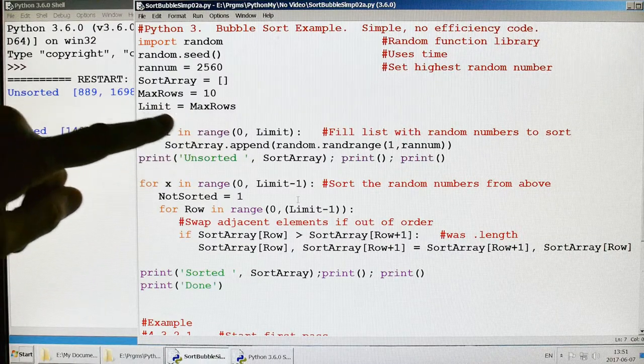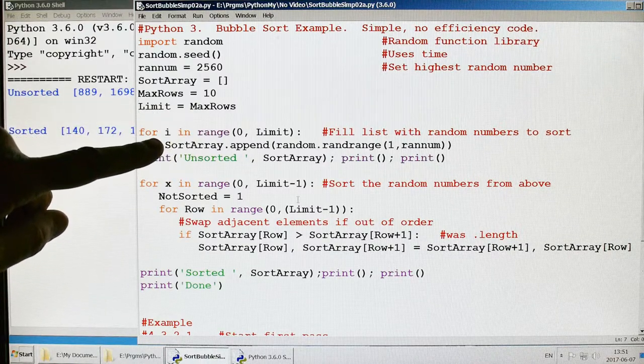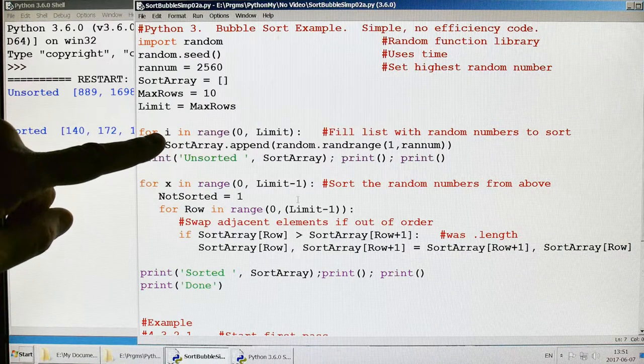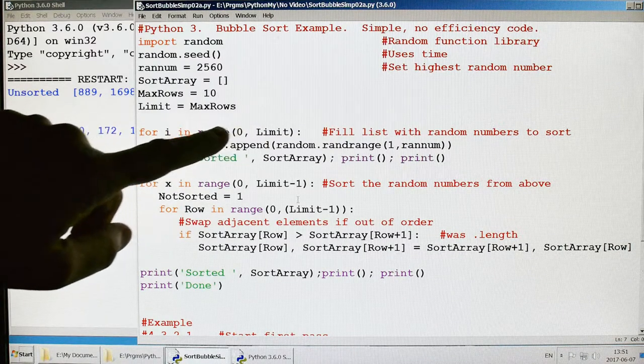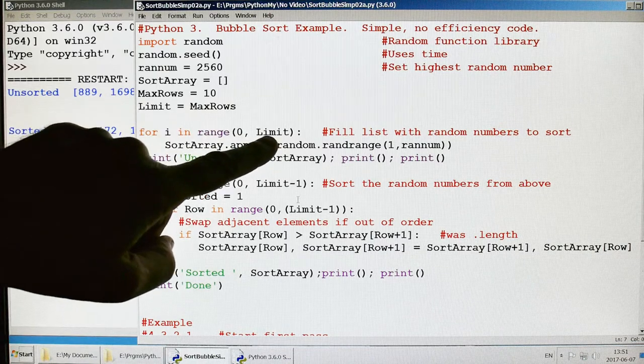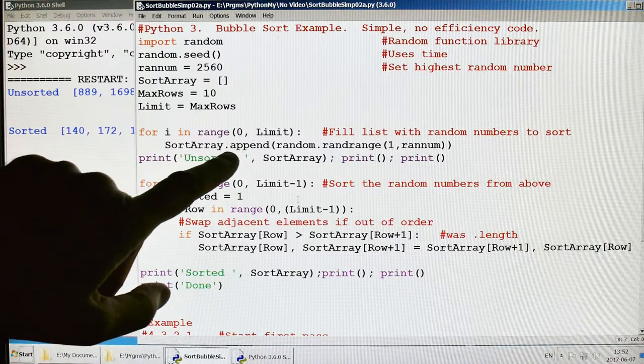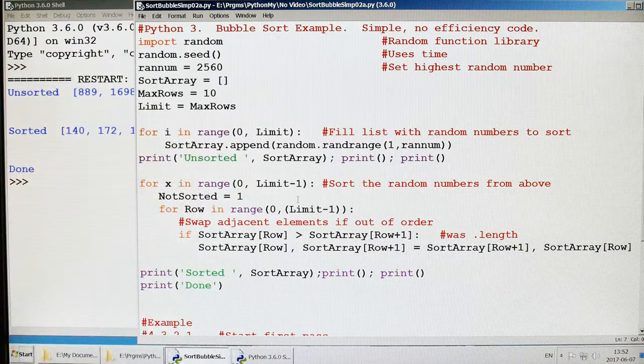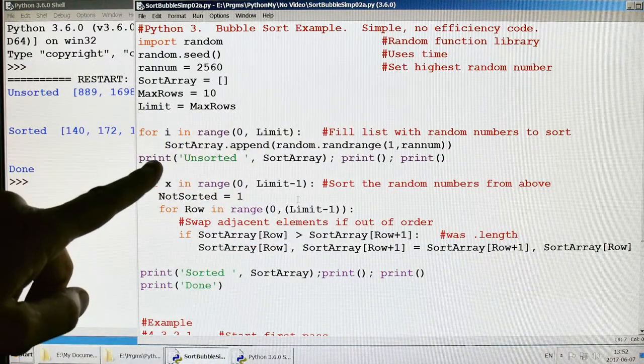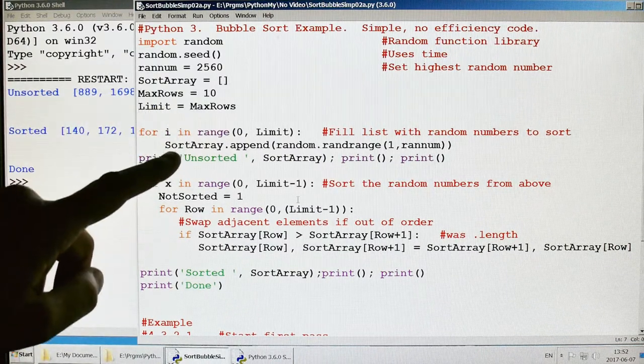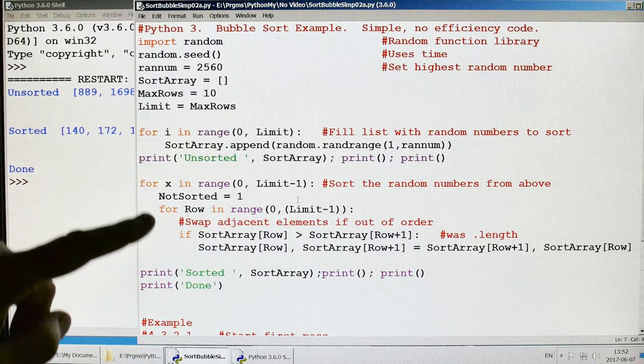So here's where I create, I fill the list with random numbers that I'm going to sort. And so it's from I until the limit that we set here. The maximum rows, maximum rows was 10, so it's going to go from 0 to 10. And sort array dot append, so I'm just going to create this list and I'm going to append random numbers on the end of the list. And then I'm going to print it. And so that's this part. Just create the array, fill it, and then print it out.